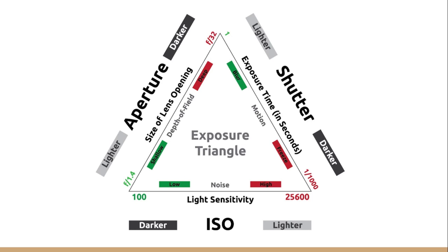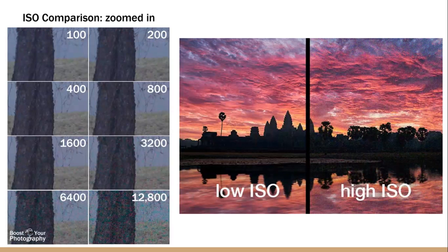The lower ISO is the darkest and the higher ISO is the lightest, in terms of the ISO value. Looking at an ISO comparison — the first photo appears to be tree bark — at 100 the photo is quite dark, and at 800 or 1200 it becomes quite grainy, making it very difficult to see the details of the image.